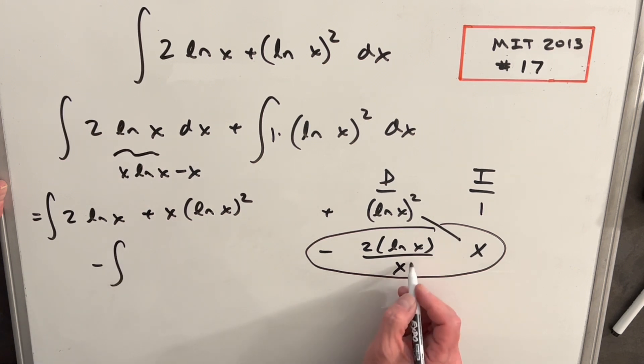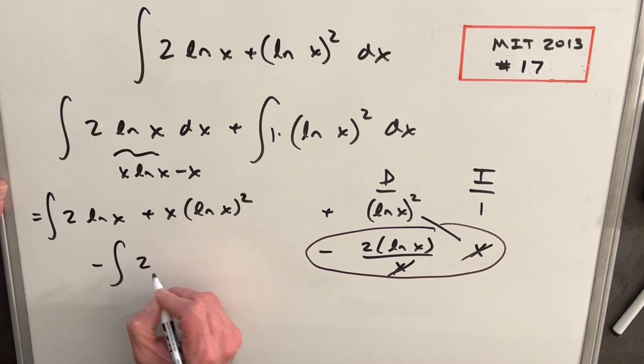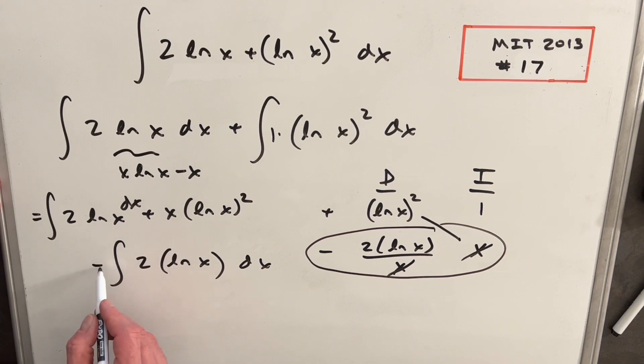And then we have minus, well, this is going to cancel with this, and we're going to have 2 ln x. The thing to notice is this integral and this integral are exactly the same, so those cancel to 0.